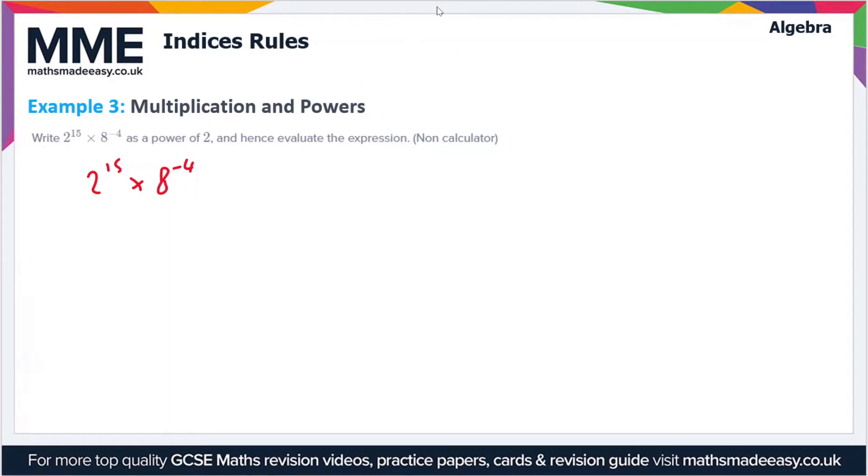It looks complicated at first, but one thing you should know is that 2³ equals 8. So if we substitute this into our expression, we get 2^15 × (2³)^(-4). Now if we use our rules of indices